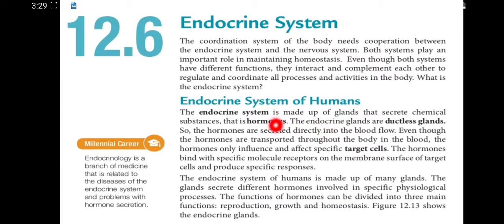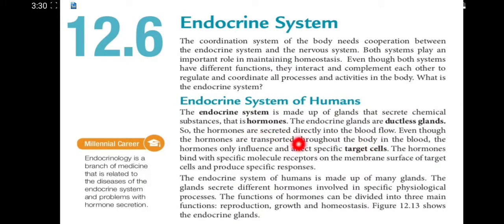The endocrine system of humans is made up of glands that secrete chemical substances, which are hormones. Endocrine glands are ductless glands - they do not have ducts, so the hormones secreted will directly flow into the blood. Even though hormones are transported throughout the body in the blood, they only influence and affect specific target cells. The hormone binds with specific receptor molecules on the membrane surface of target cells and produces specific responses.